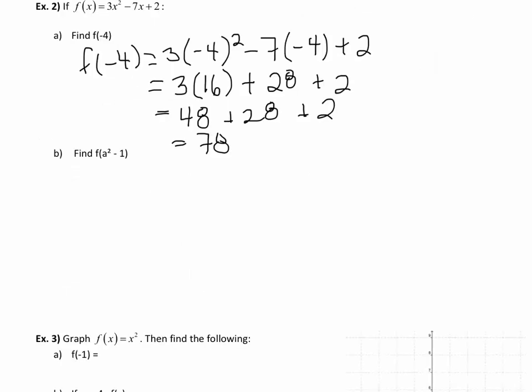Part B, find f(a squared minus 1). Again a little bit trickier here. Plugging that in now, anywhere that you see an x, we've got to put in an a squared minus 1. So those brackets are coming in really handy right about now.